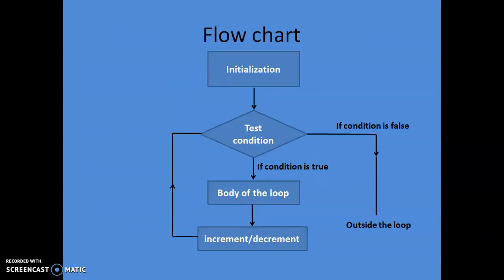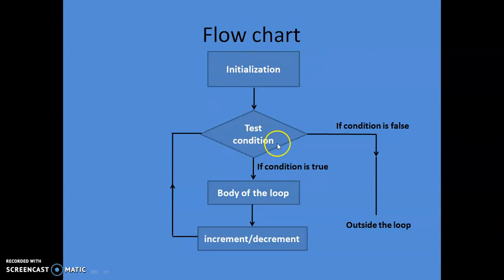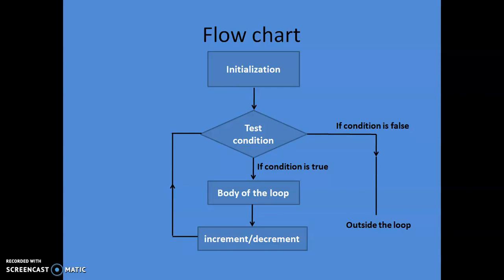Let's have a look at the flowchart to see how the for loop works. The flowchart starts with initialization, which is the first stage — and this is true for all kinds of loops, whether while or do-while. In the case of for loop and while loop, the next stage is the test condition. This is not true for do-while, because in do-while the condition is tested at the bottom. That's why for loop and while loop are known as entry control loops, because the condition is tested at the beginning.